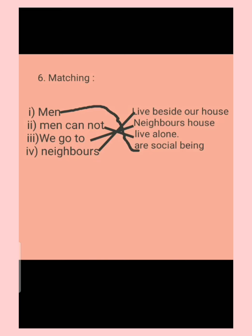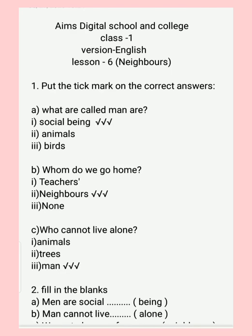Our last topic is matching. There are two sides — left hand side and right hand side — and you should match them to make a correct sentence. Left side: men, men cannot, we go to neighbors. Right side: live besides our house, neighbor's house, live alone, are social being. Answers: men are social being; men cannot live alone; we go to neighbor's house; neighbors live besides our house. We have completed our matching.